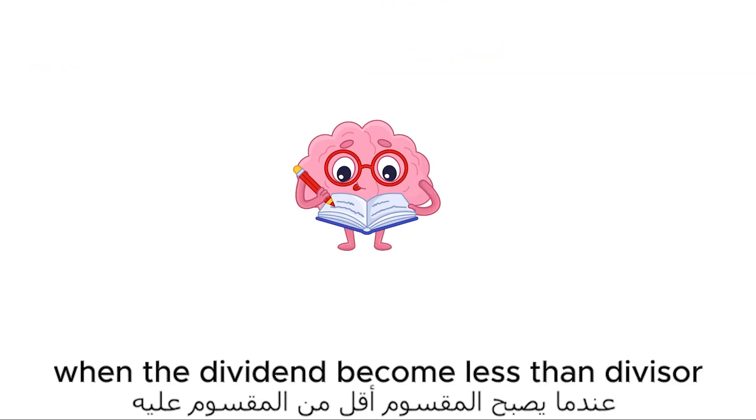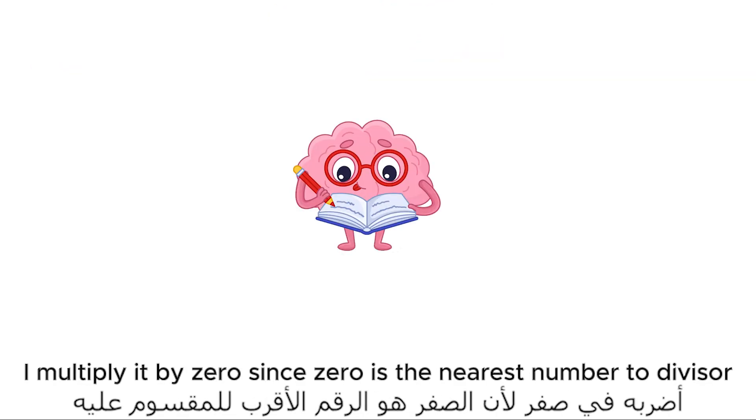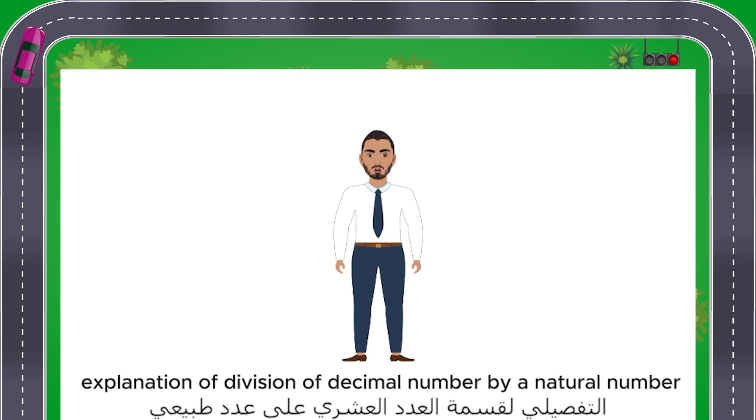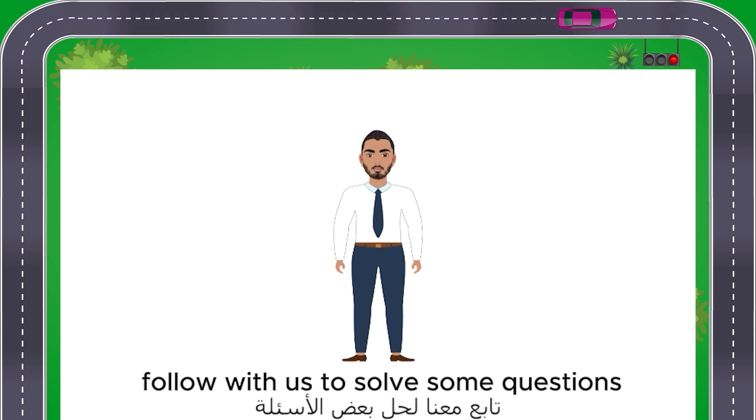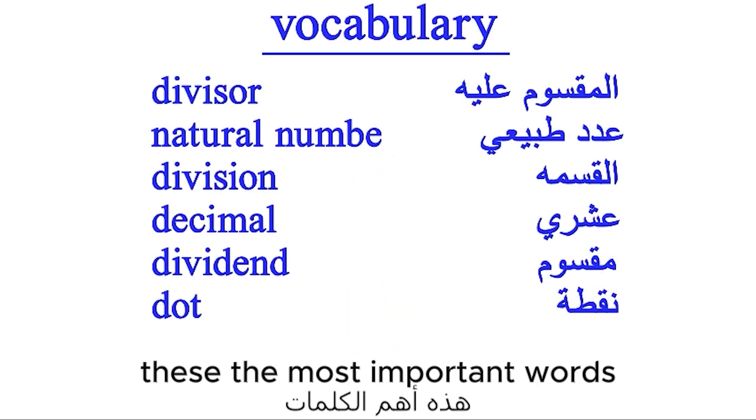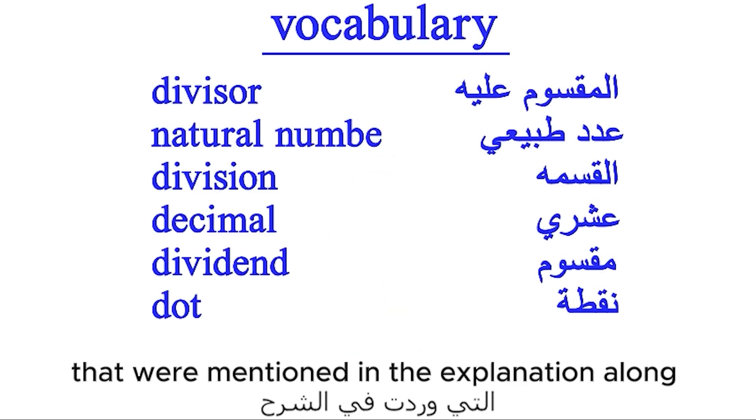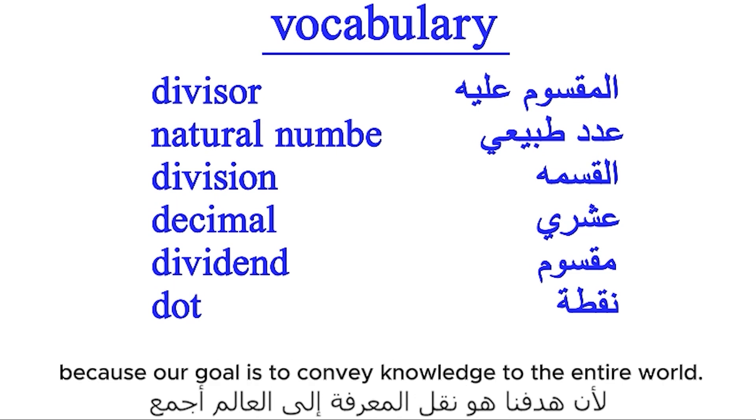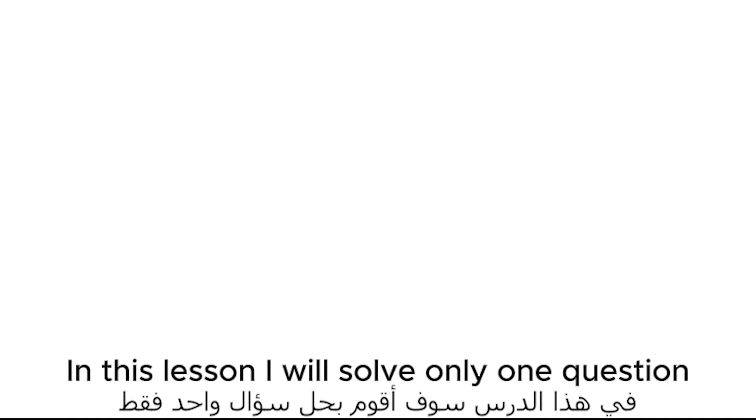Note: when the dividend becomes less than the divisor, I multiply it by 0 since 0 is the nearest number to the divisor. If you are still having difficulty after this detailed explanation of division of decimal number by a natural number, follow with us to solve some questions. But before we begin to solve the questions, these are the most important words that were mentioned in the explanation along with their translation into Arabic, because our goal is to convey knowledge to the entire world. In this lesson, I will solve only one question that includes several parts. Each part has an idea.